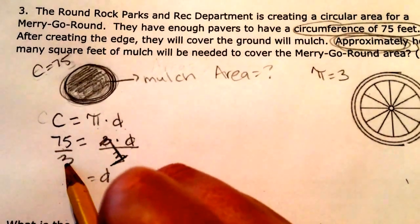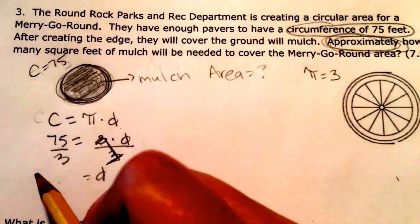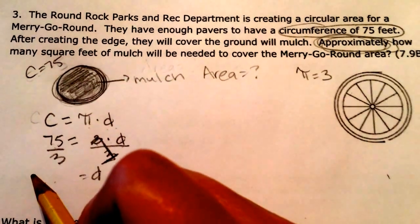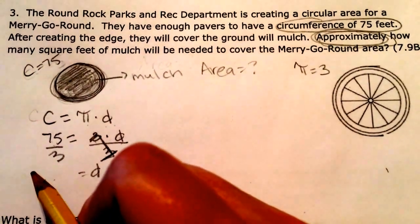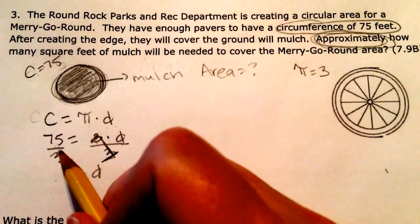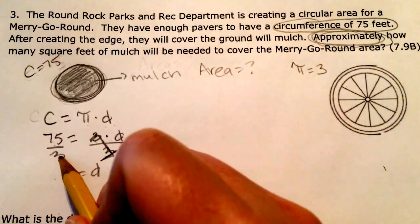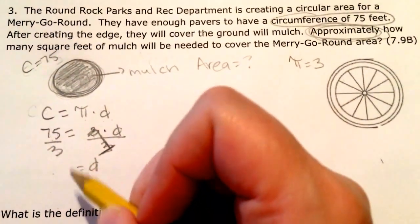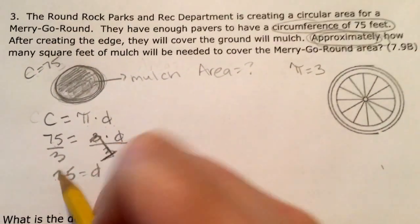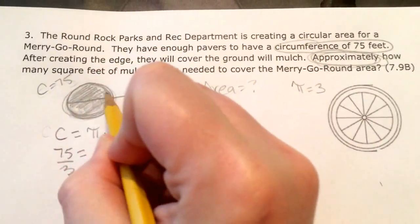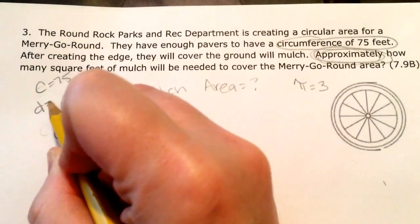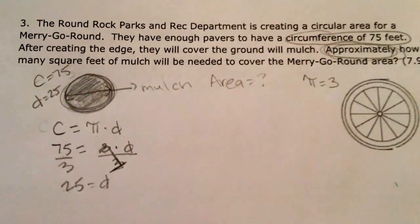75 divided by 3, let's think about that. 75, 75 cents. 75 cents is 3 quarters. 75 divided by 3 is basically 1 quarter, which is 25 cents. So my diameter is 25, going all the way across. My diameter is 25.